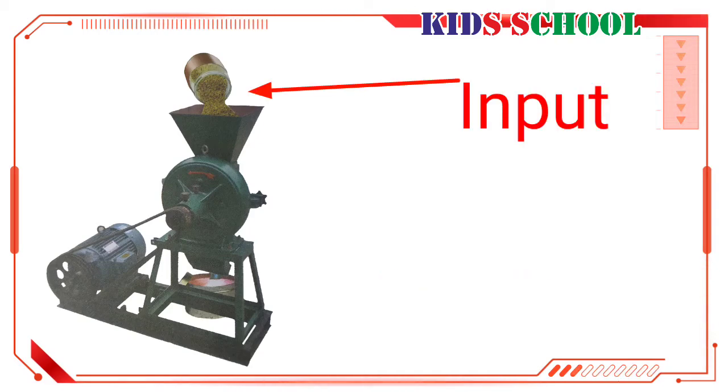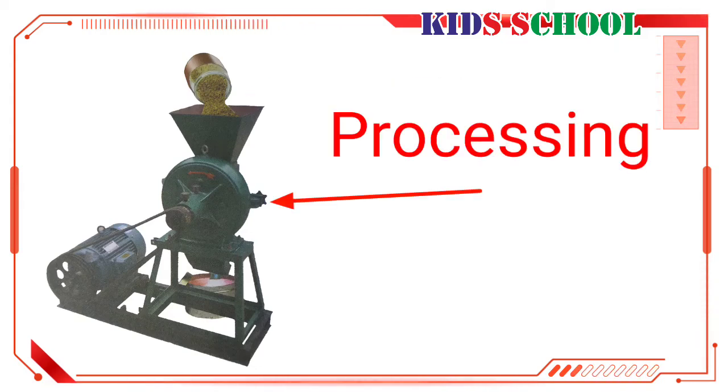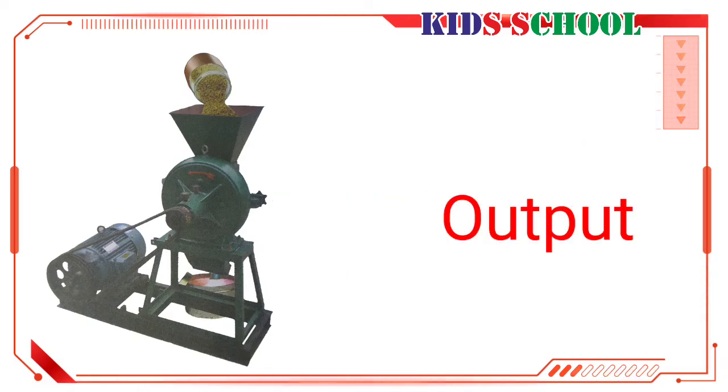So, dear students, food grains put into the big vessel are input. The crushing or grinding of the food grains into flour is called processing. The flour which comes out of the flour mill is the output.